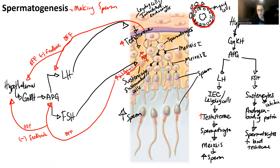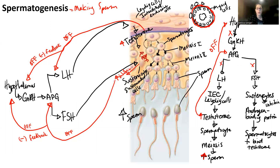So for the negative feedback: as sperm count increases, testosterone levels will be very high, and testosterone feeds back and turns off the anterior pituitary gland and the hypothalamus — so no more sperm production. Inhibin will also increase as sperm count increases, feeding back to turn off GnRH, LH, and FSH. That's how we stop the system so you don't overproduce sperm.